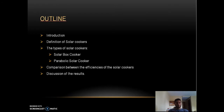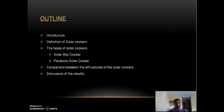First, a brief outline of the presentation. I will introduce the subject and why I chose it, then define solar cookers, give properties of two main types — the solar box cooker and the parabolic solar cooker — perform a heat transfer analysis to determine the efficiency of each, and finally discuss the results obtained.